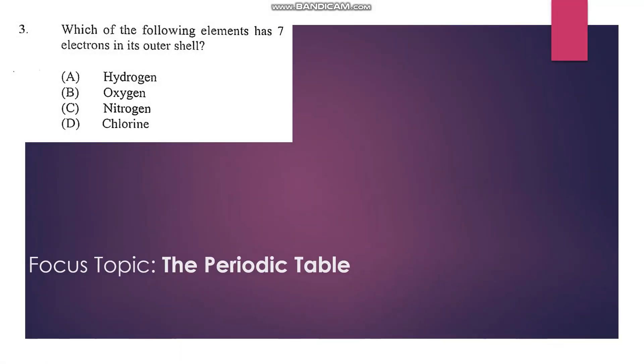Number 3: which of the following elements has 7 electrons in its outer shell? Now group 7 elements would have 7 electrons in their outer shell. We know that hydrogen, oxygen, and nitrogen are not in group 7. Chlorine is in group 7 and has an electronic configuration of 2, 8, 7, so chlorine is our answer, that's D.